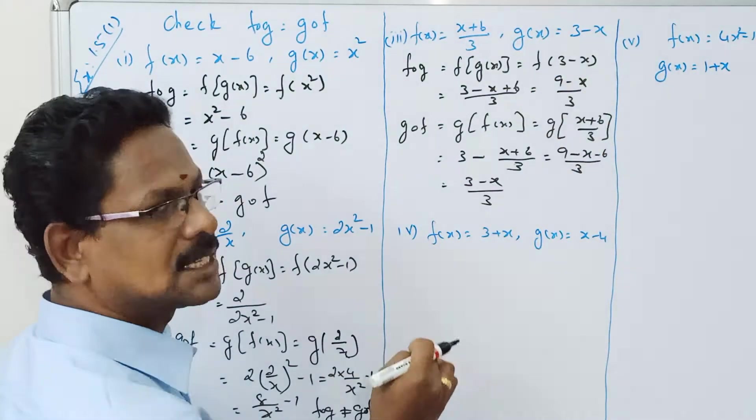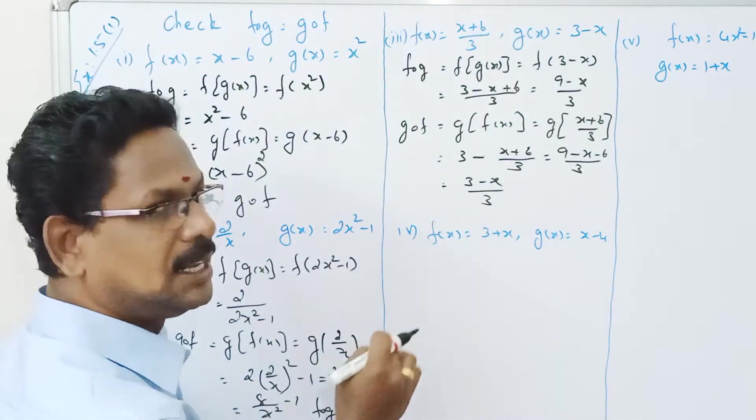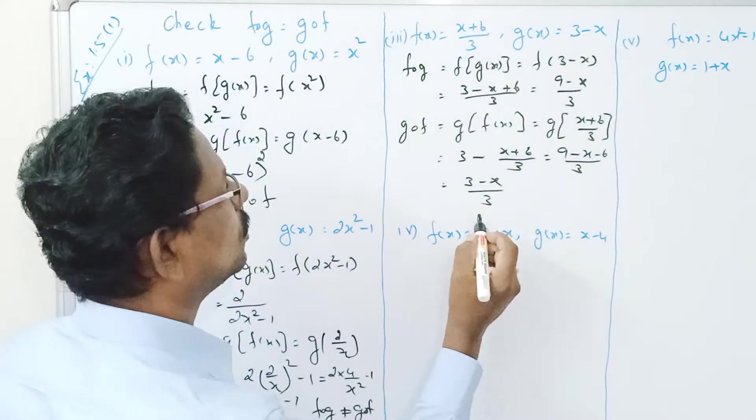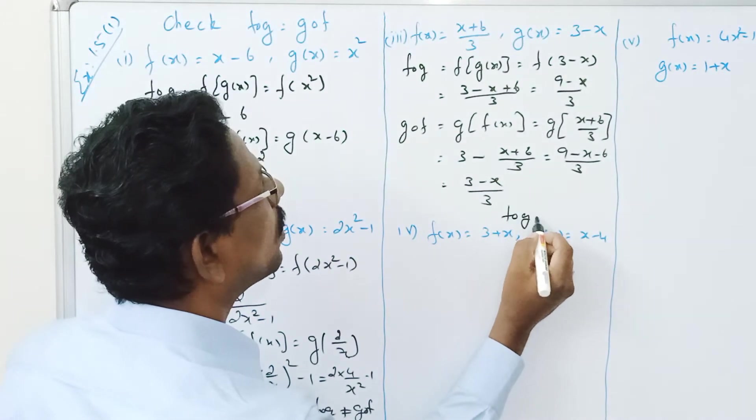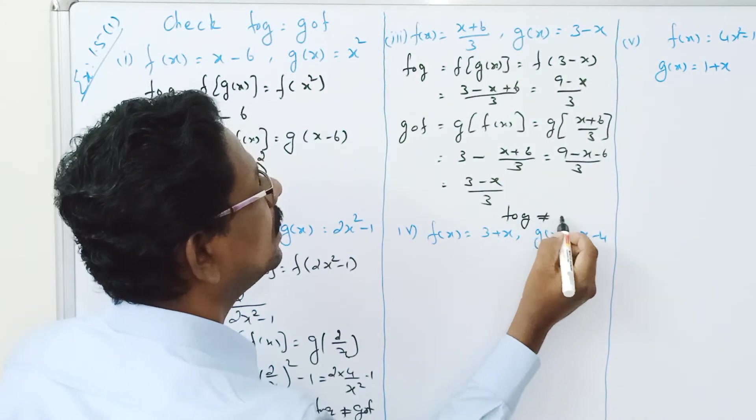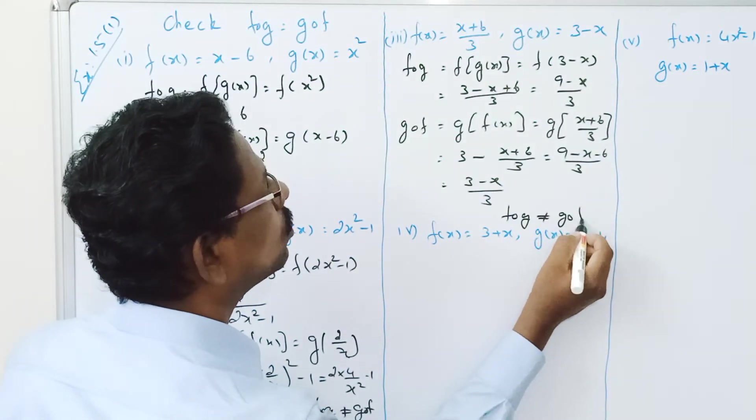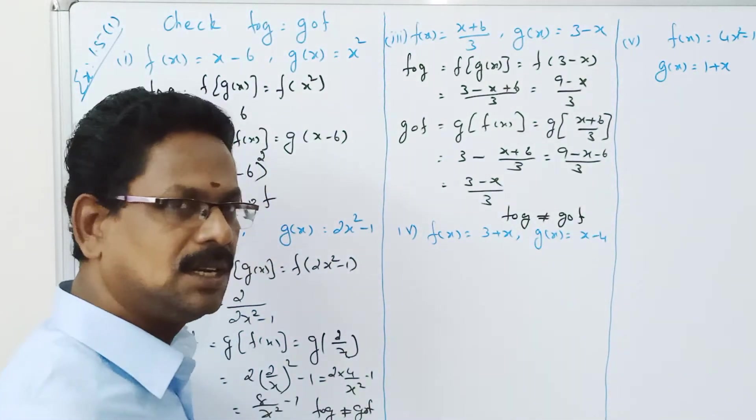Here F composition G gives 9 minus X divided by 3, and G composition F gives 3 minus X divided by 3, so F composition G is not equal to G composition F.